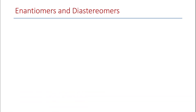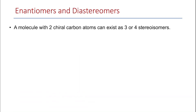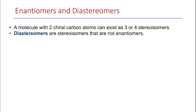So what are diastereomers? When a molecule has two chiral carbon atoms, it can exist as three or four different stereoisomers. Diastereomers are the stereoisomers which are not enantiomers. So not all of these will be enantiomers — we will have diastereomers and we will have enantiomers.